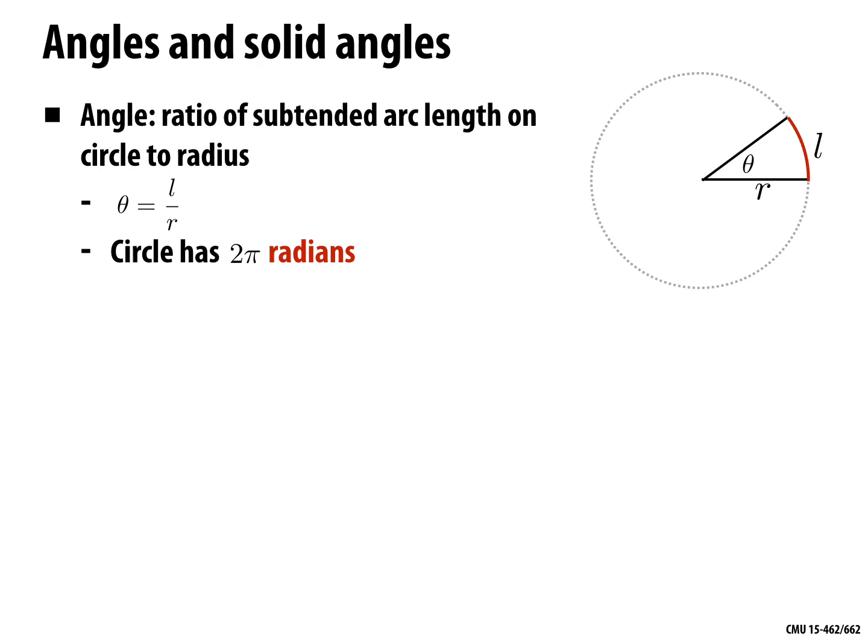When talking about distribution of light, it's also useful to break it down over angle. An angle is the ratio of an arc on a circle to the radius of that circle: theta equals l over r. If the arc goes all the way around, its length is 2 pi r, and dividing by r gives 2 pi — which is correct, since a full circle is 2 pi radians.